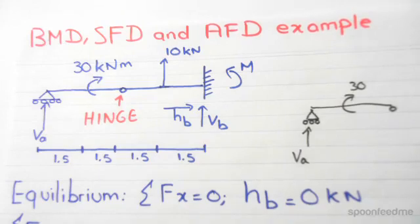On the left hand side of this structure we have a roller, and a roller has one vertical restraint as you can see over here.